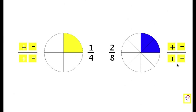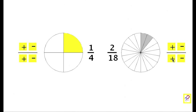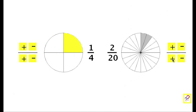I'll try twentieths this time. And I'll adjust the numerator so that the fractions are still equivalent. It's currently two twentieths, three, four, five. And there we are. Five twentieths is equivalent to a quarter.